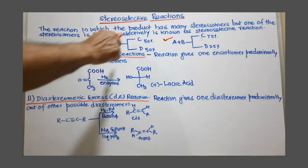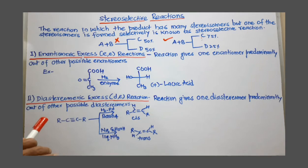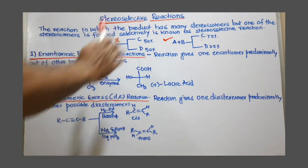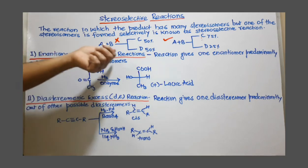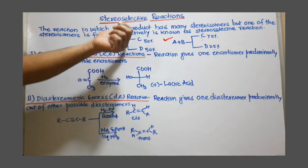Depending on the enantiomers and diastereomers, these stereoselective reactions are actually divided into two types. One is enantiomeric excess reaction, also called enantioselective reaction.